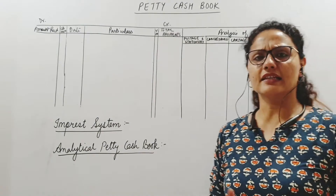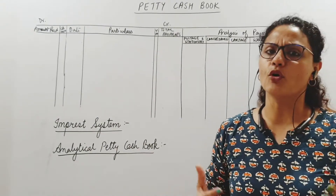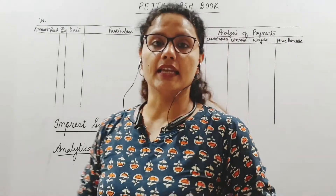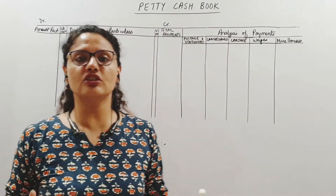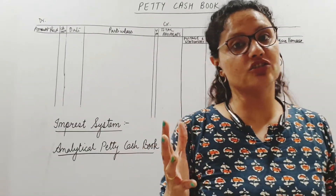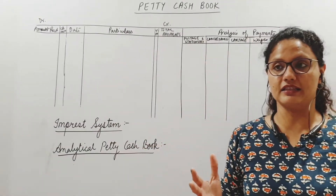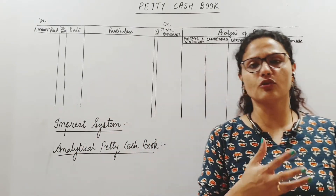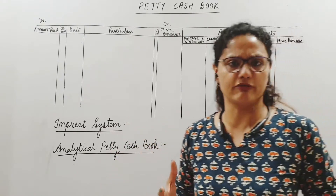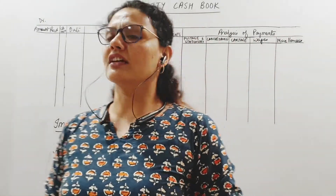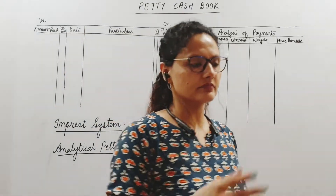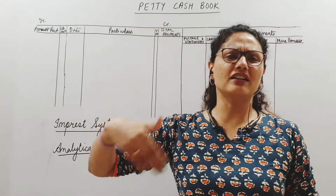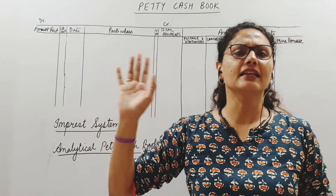It is basically to record all petty expenses — meaning small, day-to-day, recurring expenses. In a big organization, the cashier has a lot of load on their head. Cash dealing is very risky — there are chances of theft, embezzlement, cash counting and all that. It is a lot of headache. So the cashier wants help. They want to take care of only the major payments and give the recurring day-to-day expenses to a petty cashier.